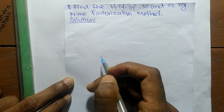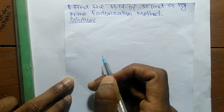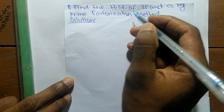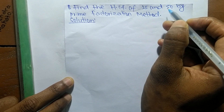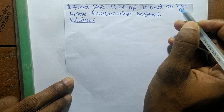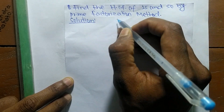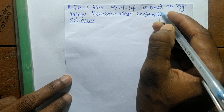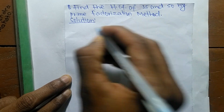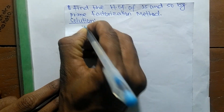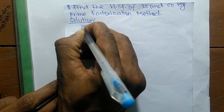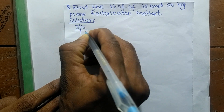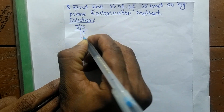Today in this video we shall learn to find the HCF of 15 and 50 by prime factorization method. First of all we find out the prime factors of 15, which is 3 times 5, equals 15.